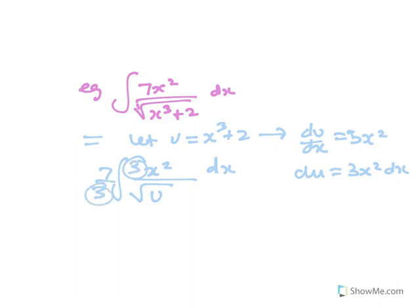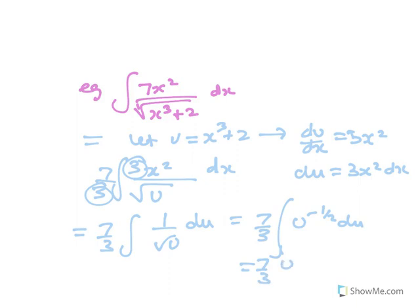So put it in and divide by it. So you've got 7 on 3, the integral of 1 on root u du. So all that's left now is to bring the root u up to get u to the minus half du, which is 7 on 3, u to the half on a half, which is 14 on 3, root u plus c.